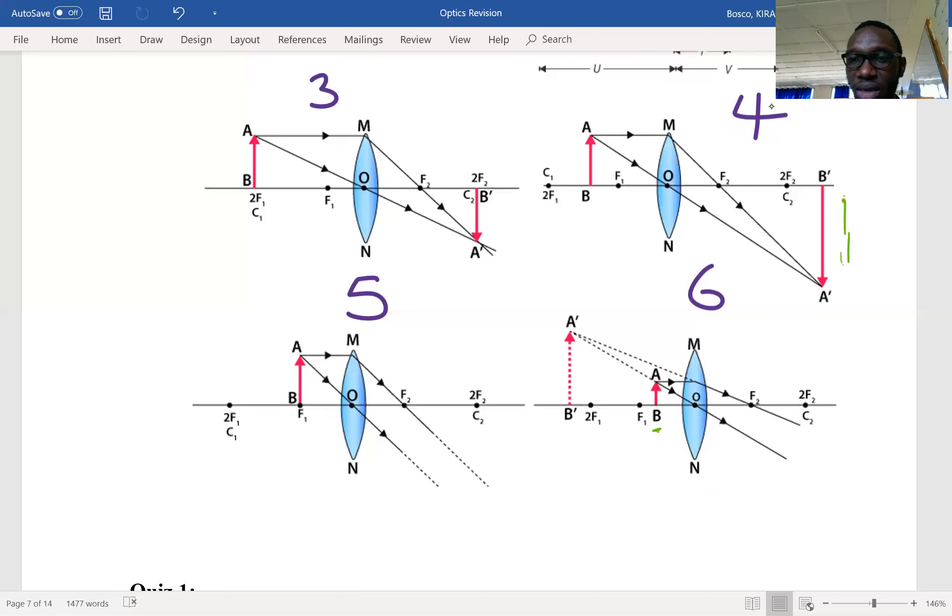The last one is diagram six. You can see I have a small object here, AB. It is between F and the optical center of the lens, and the final image is dotted—it is virtual, formed on the same side as the object. It is magnified.